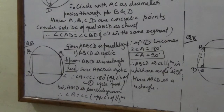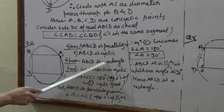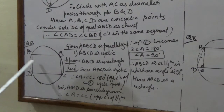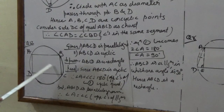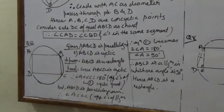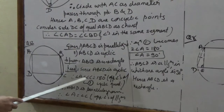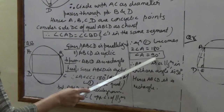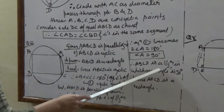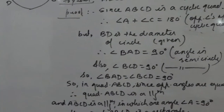In question 12, we have to prove that a cyclic parallelogram is a rectangle. ABCD is given as a cyclic parallelogram. Since ABCD is cyclic, the sum of opposite angles is 180 degrees: angle A plus angle C equals 180 degrees. Since ABCD is also a parallelogram, opposite angles are equal: angle A equals angle C. Therefore 2 times angle A equals 180, so angle A equals 90 degrees. Hence ABCD is a parallelogram in which one angle is 90 degrees, so ABCD is a rectangle.